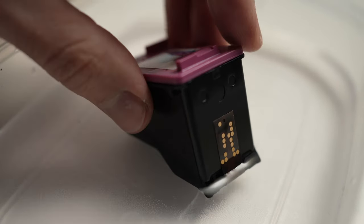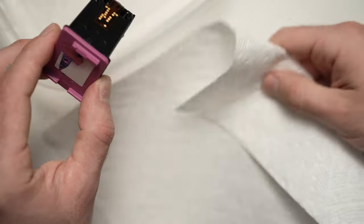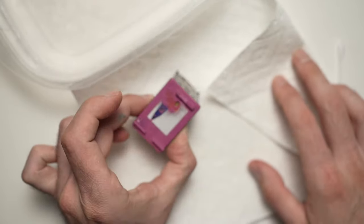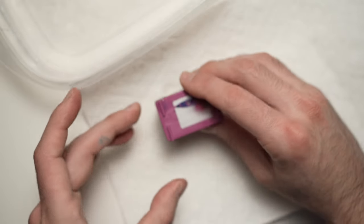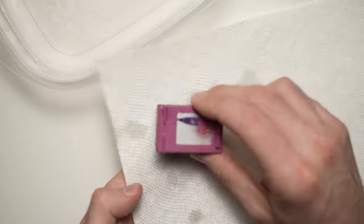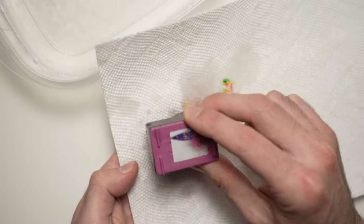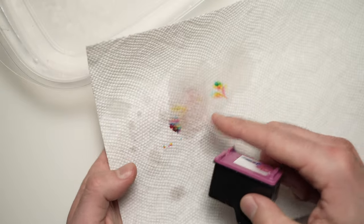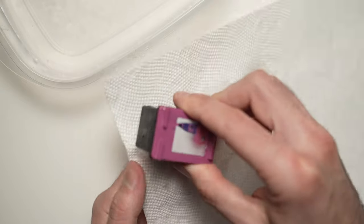Once you're done, you're going to take it out. Take your paper towel and you're going to dab it. By dabbing, I mean just pressing the cartridge on the paper just to dry it. And it's normal that the color will leak like so.